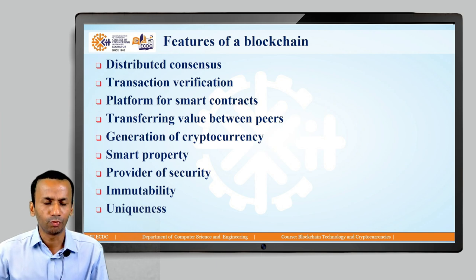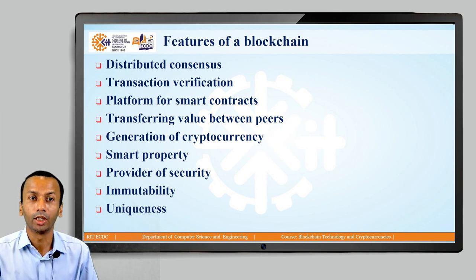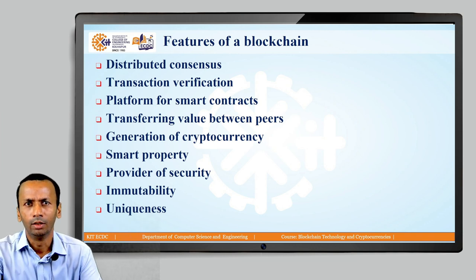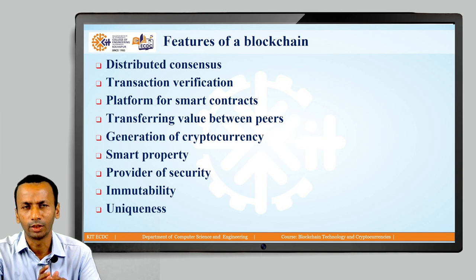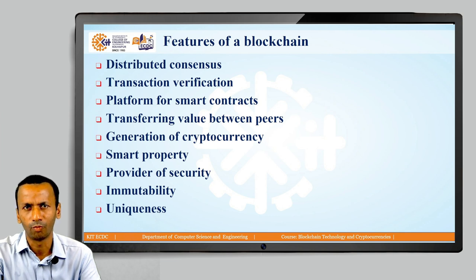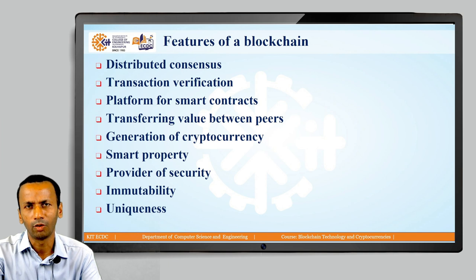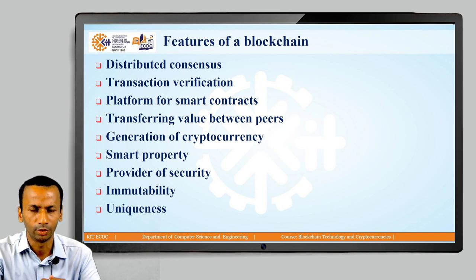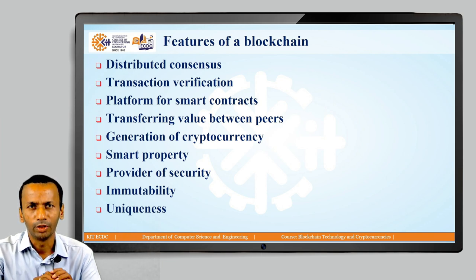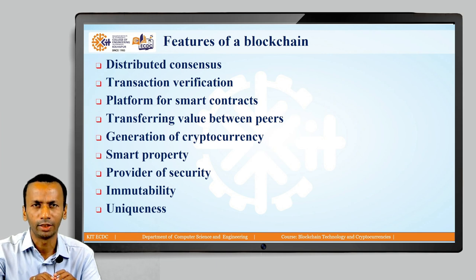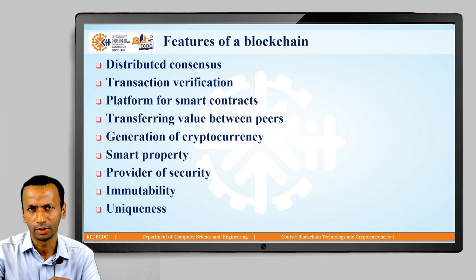The next feature is transaction verification. Each and every transaction created by any node in the blockchain network — for example, transferring money from one account to another in the financial or banking industry — can be created by any node. The transaction is verified in the blockchain network, meaning it is not repeated once recorded. Each confirmed transaction is unique in the blockchain network.